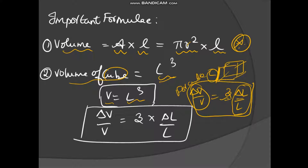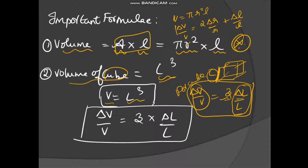For a wire, volume equals π r² L. So fractional change in volume equals 2 times fractional change in radius plus fractional change in length. This is the fractional change in volume for a wire.